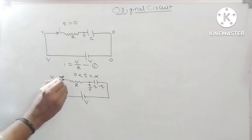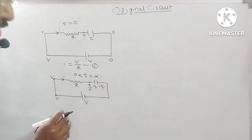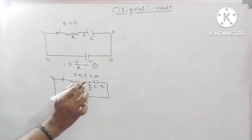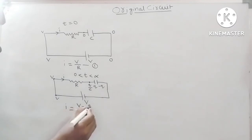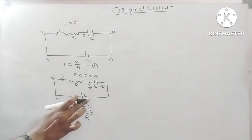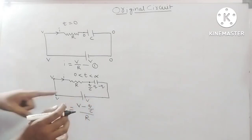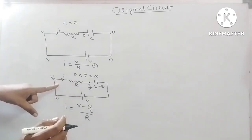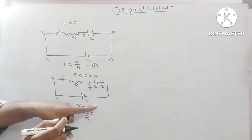So, current passes through the circuit. Current passes circuit, I is equal to, here potential V, here potential minus Q by C, divided by R.